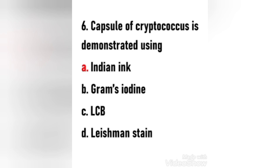Next question: The capsule of Cryptococcus is demonstrated using — Indian ink, Gram stain, LCB, or Leishman stain? The right answer is option A, Indian ink. It is a diagnostic test used to detect Cryptococcus neoformans. India ink is added to a sample of CSF fluid, and if the fungus is present, it becomes visible as the dye binds to the capsule surrounding the fungus.